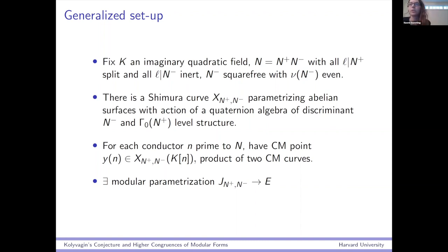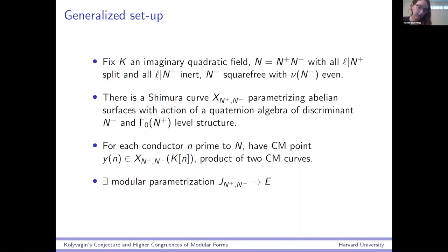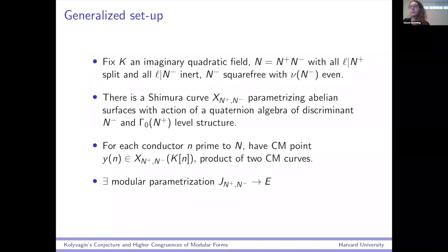What are the CM points on here? If you base change to K, your quaternion algebra splits and is just two-by-two matrices. Having an action of two-by-two matrices — the way you can get that is by just taking a self-product of a CM curve. So our CM points here are going to be Y(N), defined over the ring class field of conductor N and corresponding to some abelian surface. The reason that these CM points still have something to say about the rational points on E is that there's still a modular parameterization from the Jacobian of the Shimura curve to E — that's the content of Jacquet-Langlands.